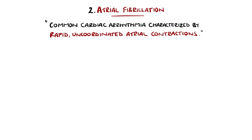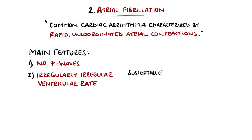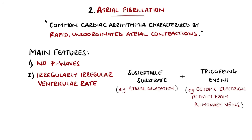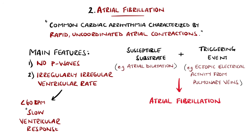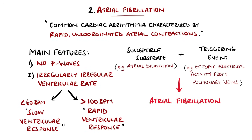Generally, atrial fibrillation occurs as a result of a substrate that will maintain the arrhythmia, such as dilatation of the atria, and a triggering event such as electrical activity arising from another atrial location — most commonly in the region of the pulmonary veins. Rates above 100 beats per minute are known as atrial fibrillation with rapid ventricular response, while those under 60 beats per minute are atrial fibrillation with slow ventricular response.